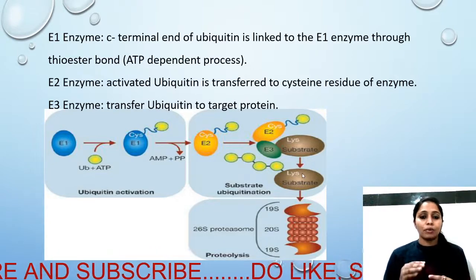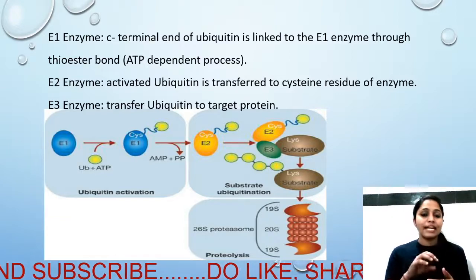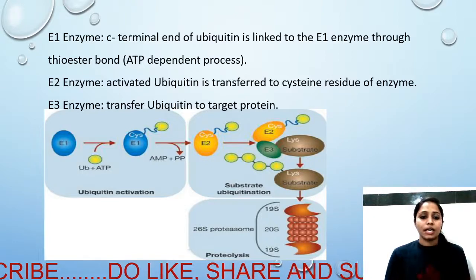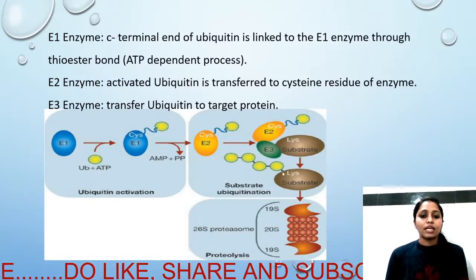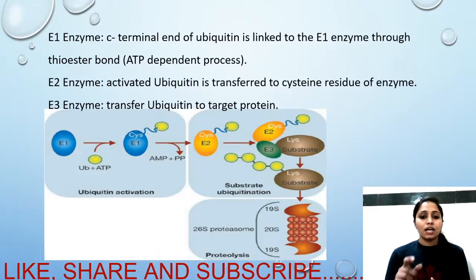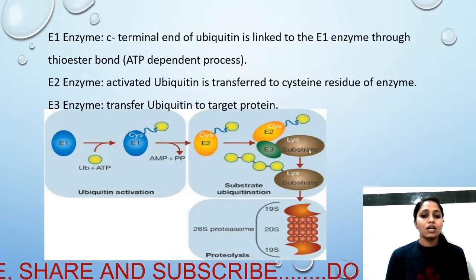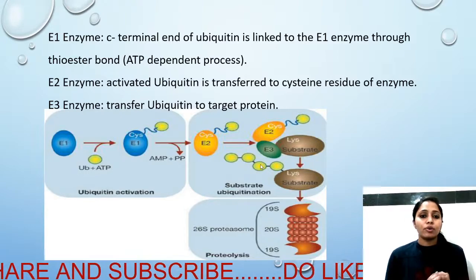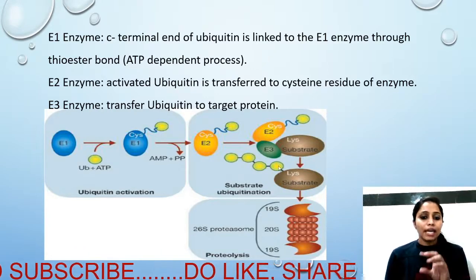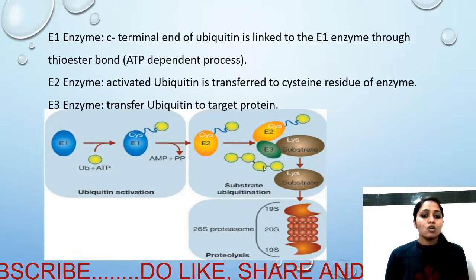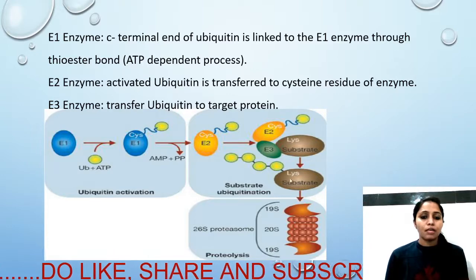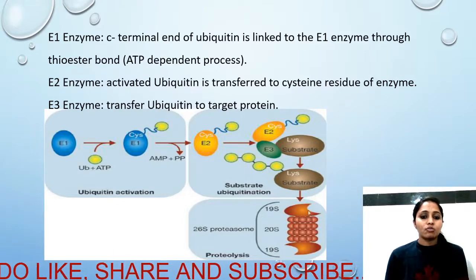The lysine residue's side chain contains an amino group to which ubiquitin ligation occurs. When polyubiquitination takes place — meaning multiple ubiquitin molecules are chained — the protein is marked for proteasome degradation. If only one ubiquitin is added, the protein will not be degraded. A polyubiquitin chain is the actual degradation tag. Additional ubiquitins are attached one after another. After polyubiquitination, the protein in the cytosol is degraded by the 26S proteasome.